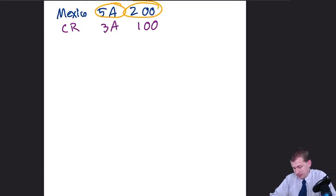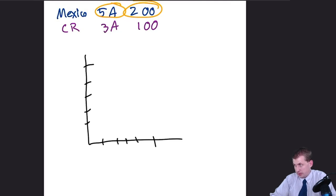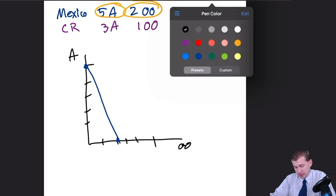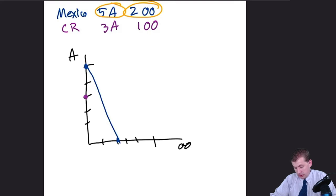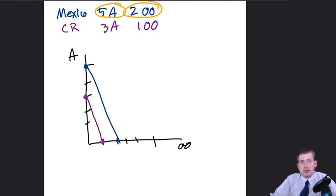Costa Rica can still produce goods and maybe it's cheaper for Mexico to get one of those products from Costa Rica. The only way to figure that out is to look at comparative advantage, not absolute advantage. Let's draw a graph — Mexico's frontier goes from five avocados to two olive oils, and Costa Rica's goes from three avocados to one olive oil. In the graph you can see Costa Rica is below Mexico at every level but comparative advantage still matters.